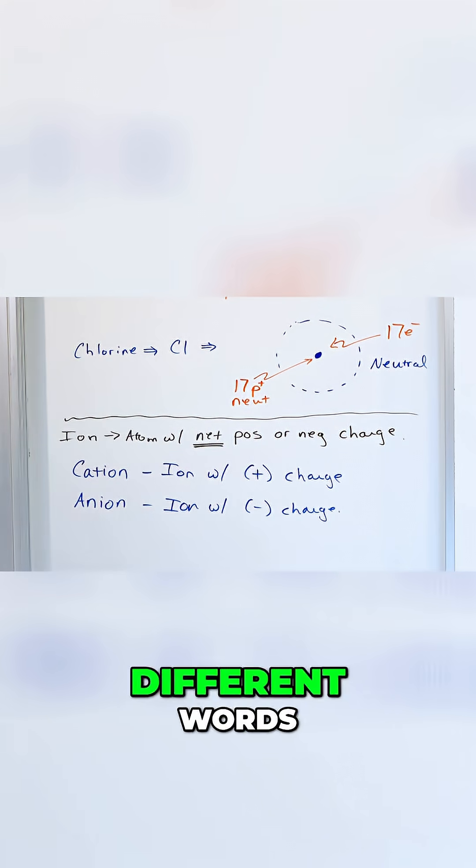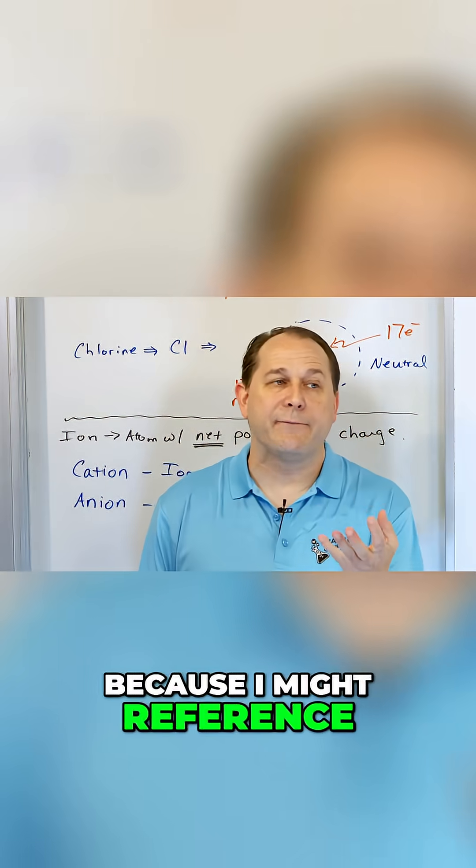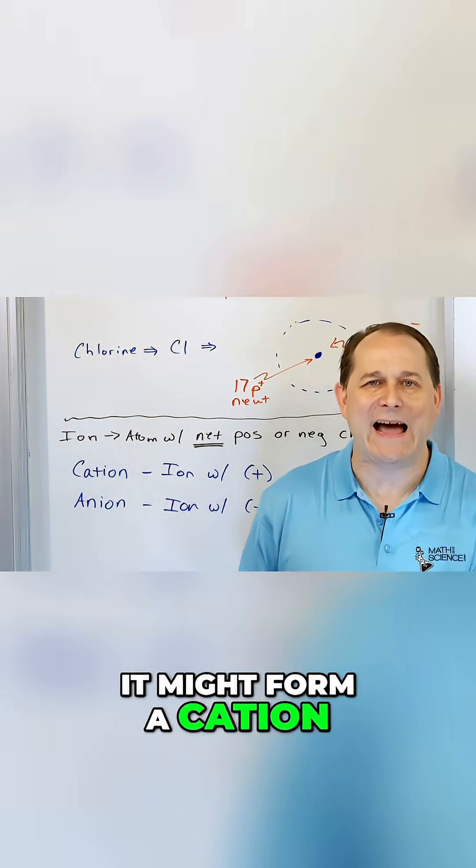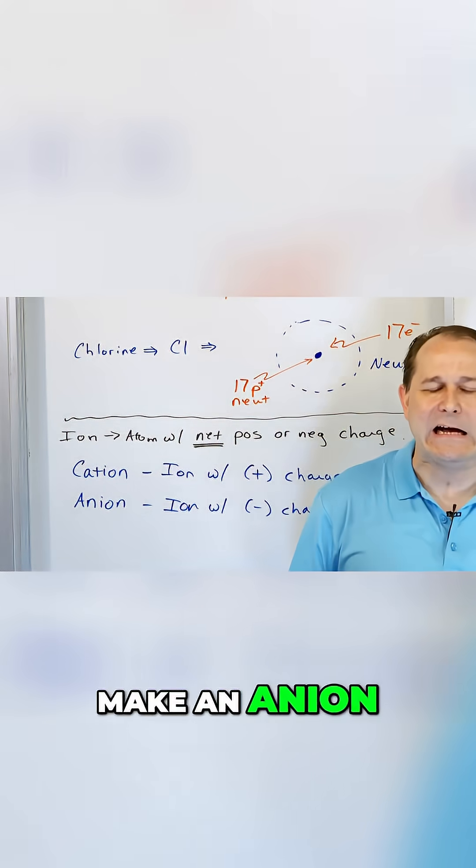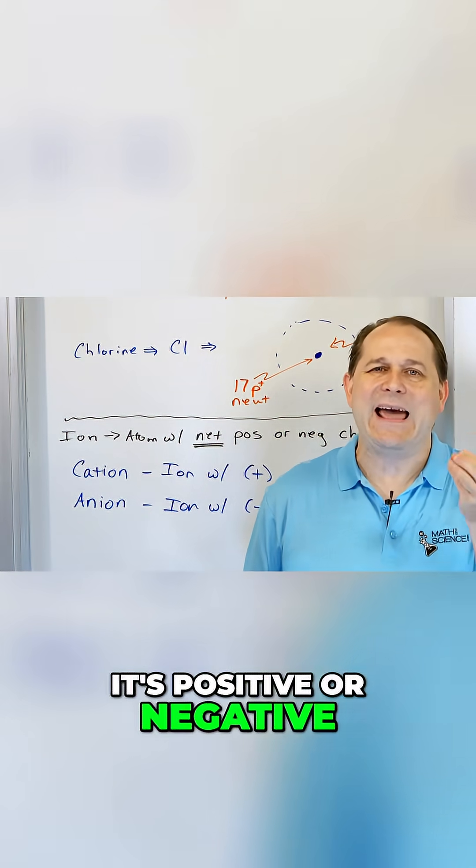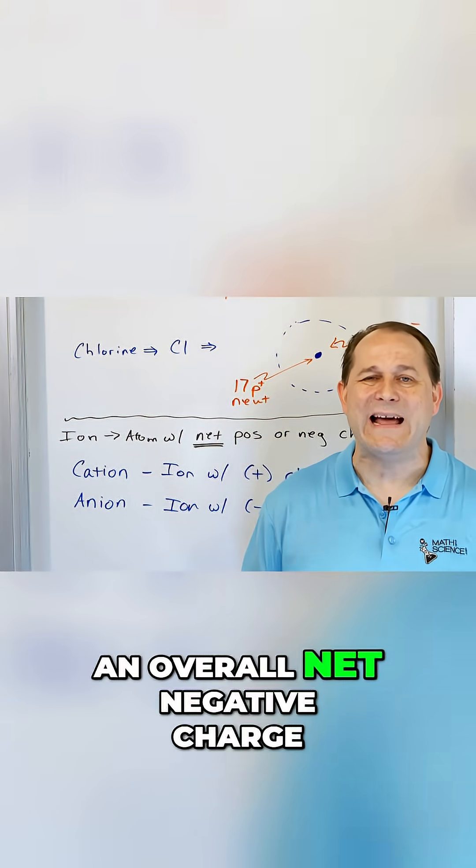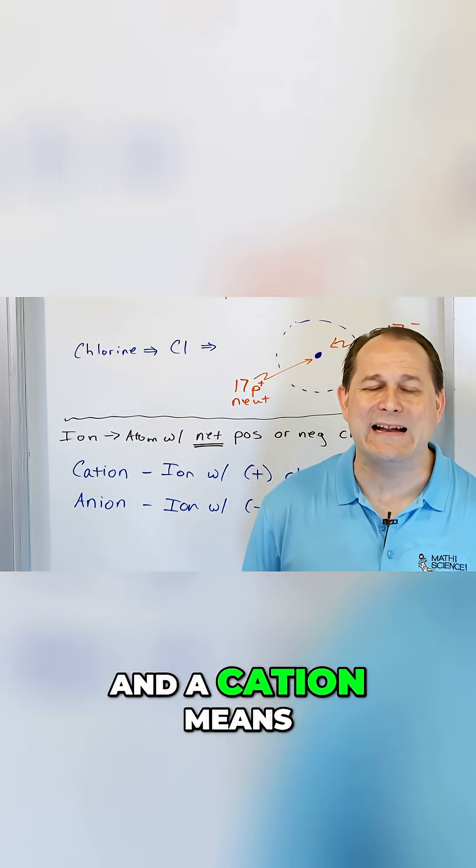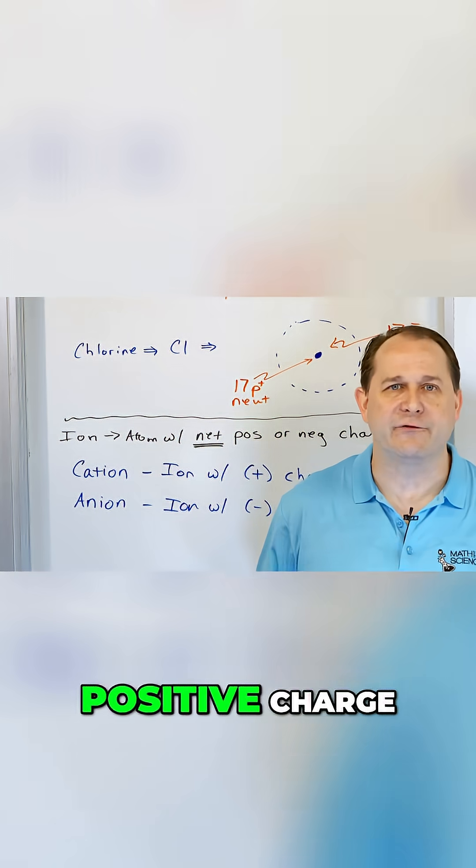So we have just different words. I might reference this element—it might form a cation, or this element might make an anion. And you know immediately, that tells me if it's positive or negative. Anion means it's got an overall net negative charge, and a cation means it has an overall positive charge.